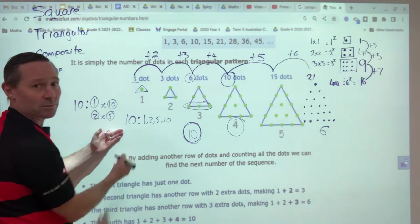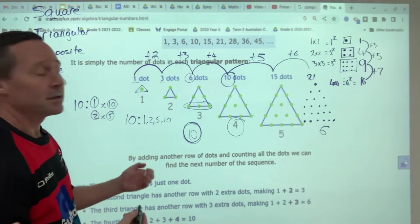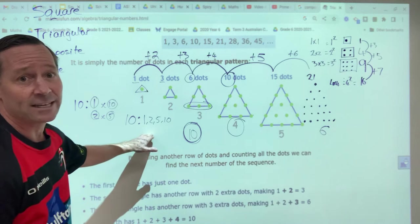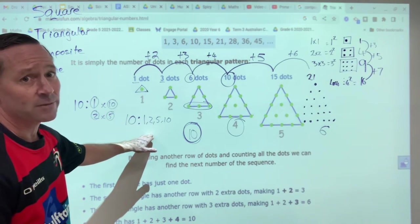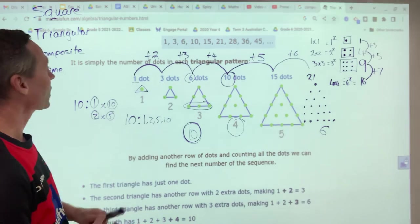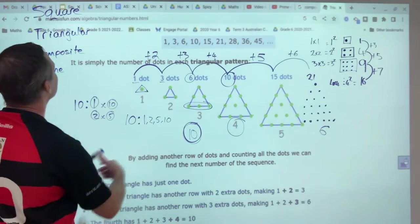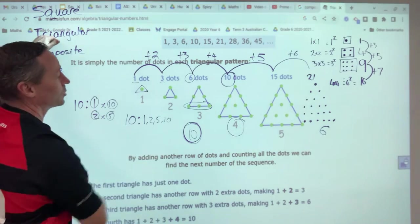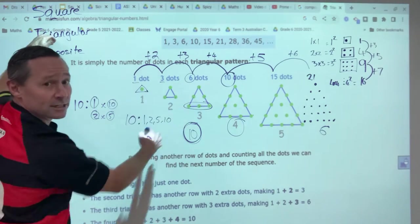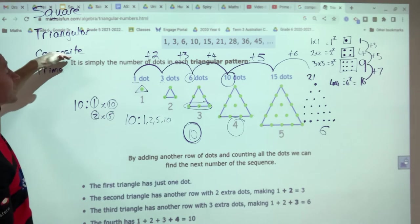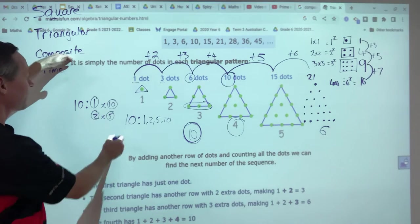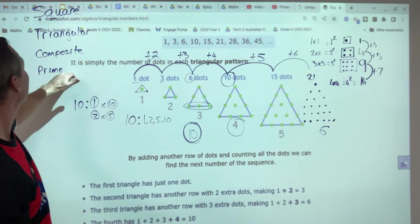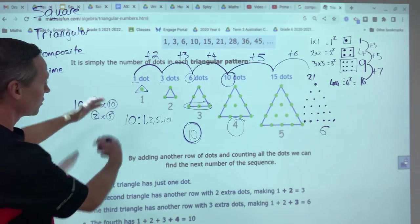So prime numbers are divisible by one and itself. Two factors. This has four factors, which makes it not a prime. It is composite. So I could say 10 is a triangular number. It is the third triangular number. And I might draw it to prove it. I could also say it's a composite number because the factors are 1, 2, 5, and 10. It's not a prime number and it's not a square number. So here's my evidence.